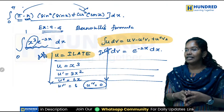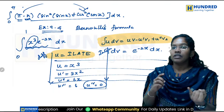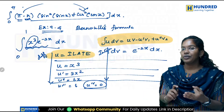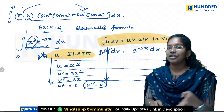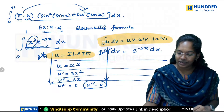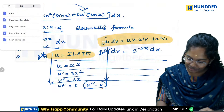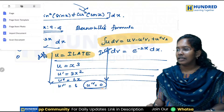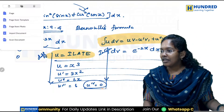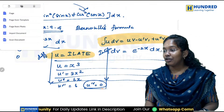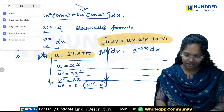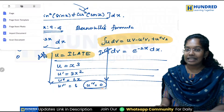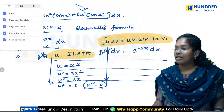We have completed exercise number 9.1, 9.2, 9.3, and 9.4. Bernoulli's formula is in exercise 9.5. So in exercise 9.5, we will discuss what has been done. There is another sum in 9.8 as well. We have mostly solved the sums and the video is available.